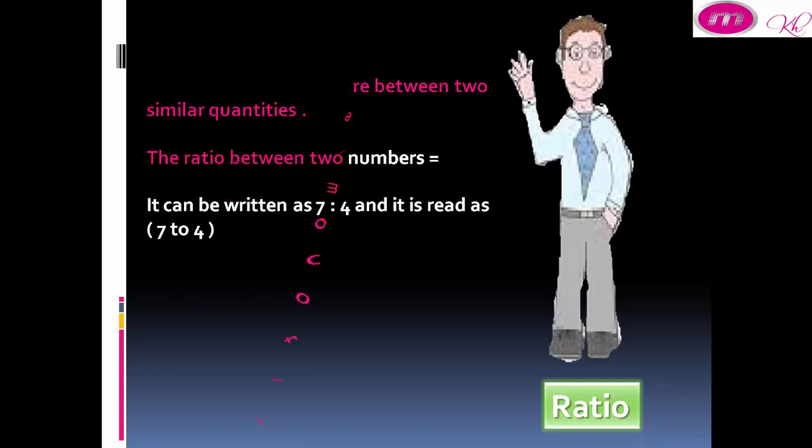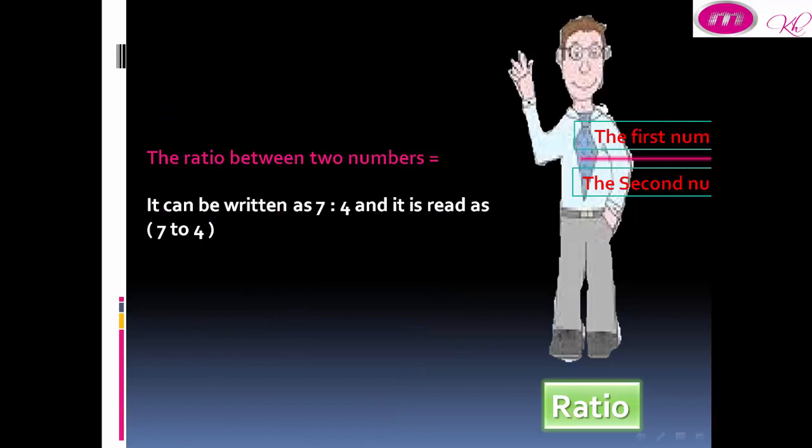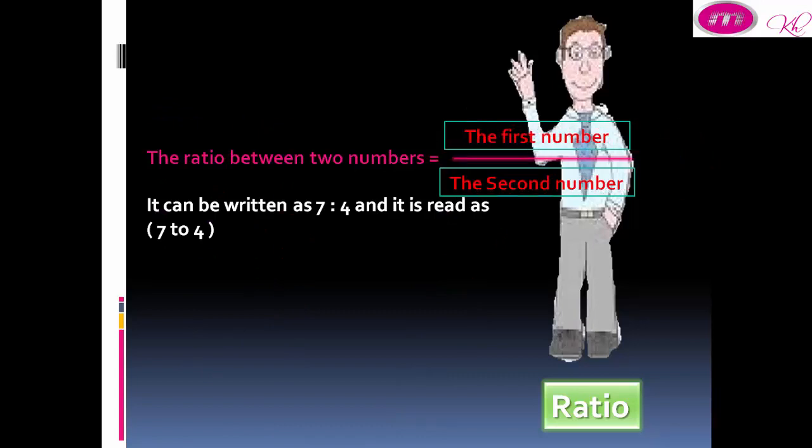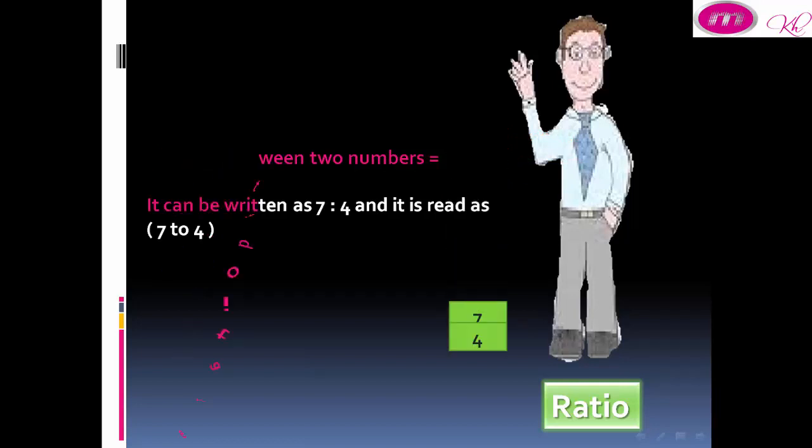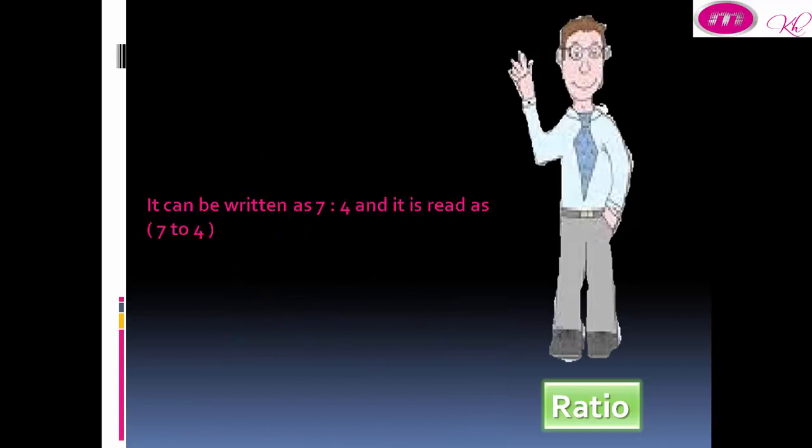The ratio between two numbers equals the first number divided by the second number, such as 7 over 4. It can be written as 7 to 4 and it is read as 7 to 4.